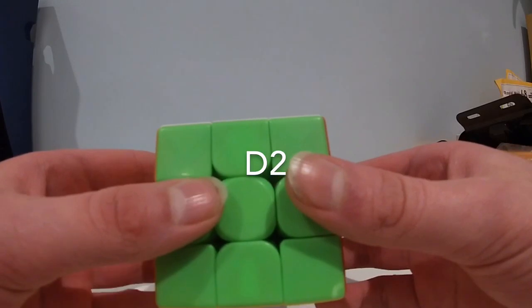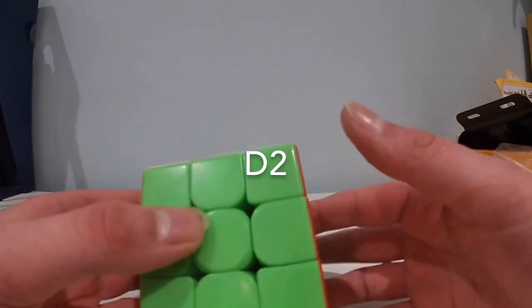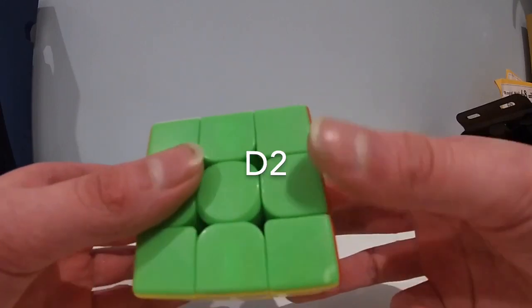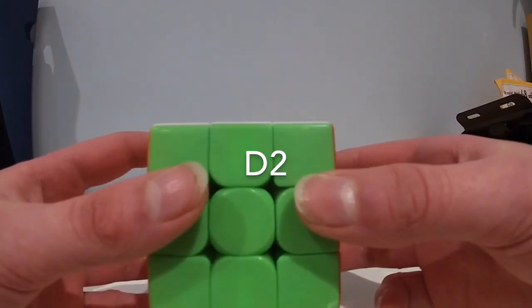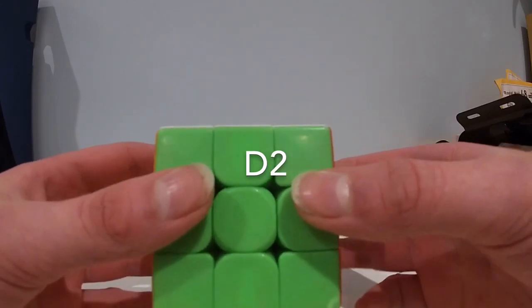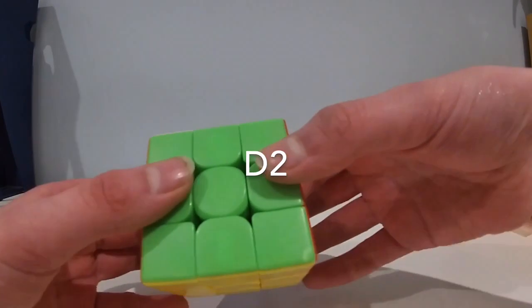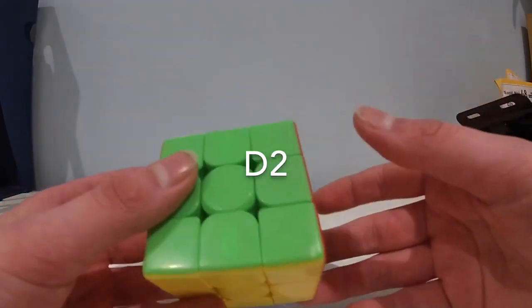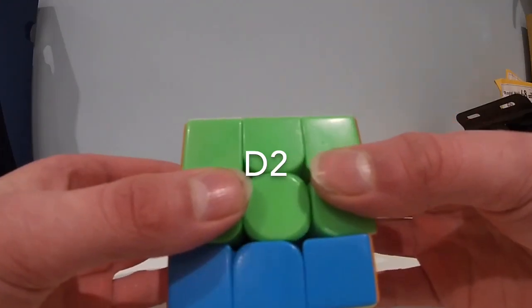The final finger trick I will be teaching is D2 double flicks. Again, like with the other double flicks, you start as if you were going to do a normal D or D prime move depending on whether you're using your left or right. Then what you do, again like the M2, there are two ways: one is with ring middle and another is with pinky ring.